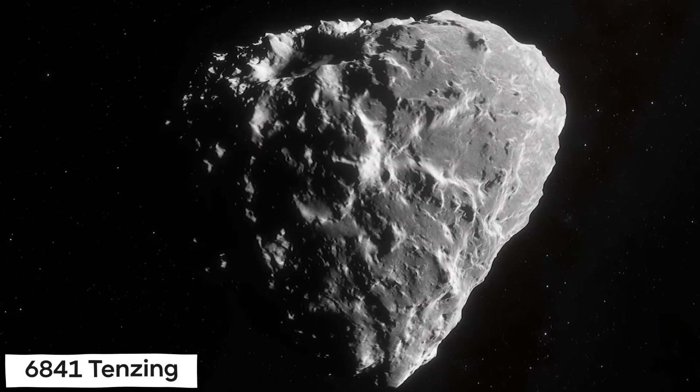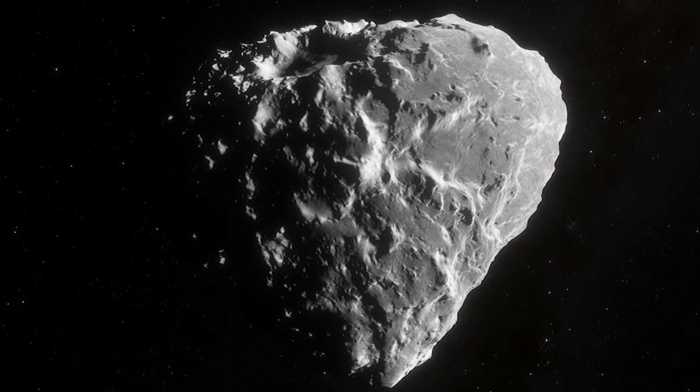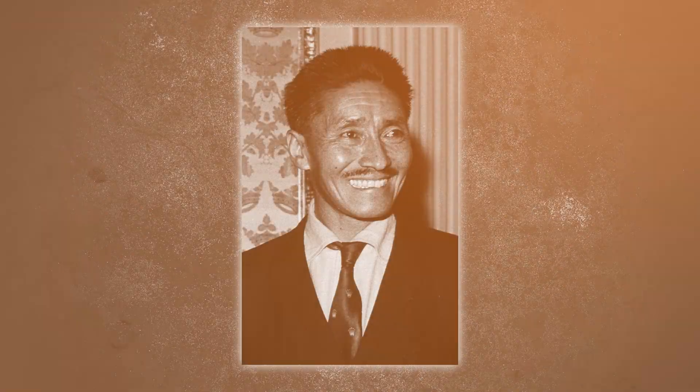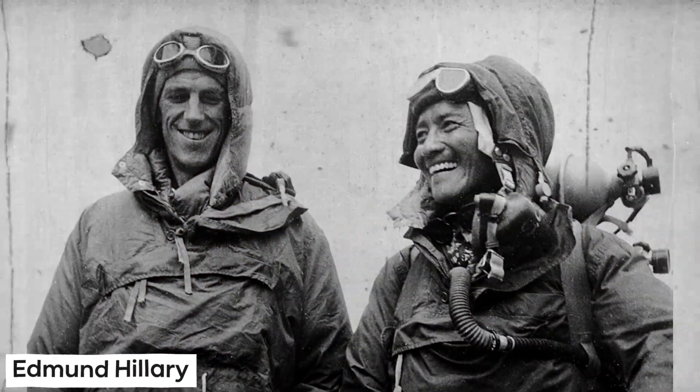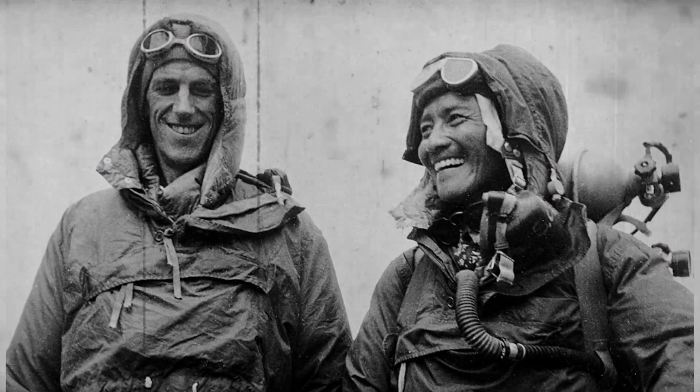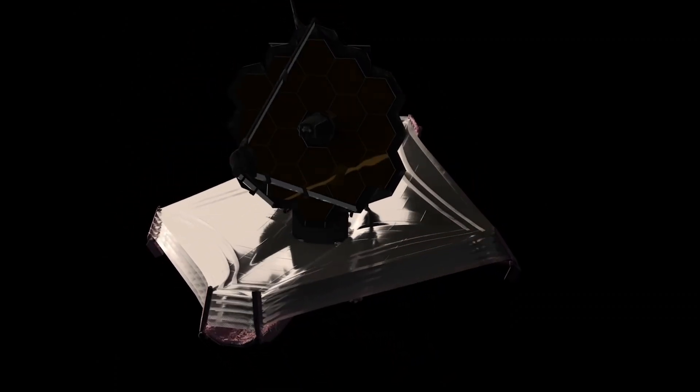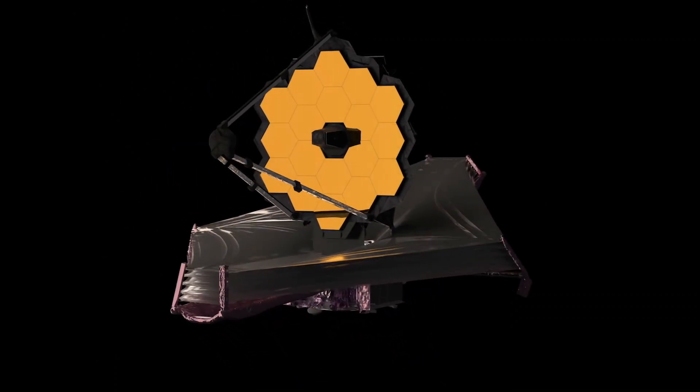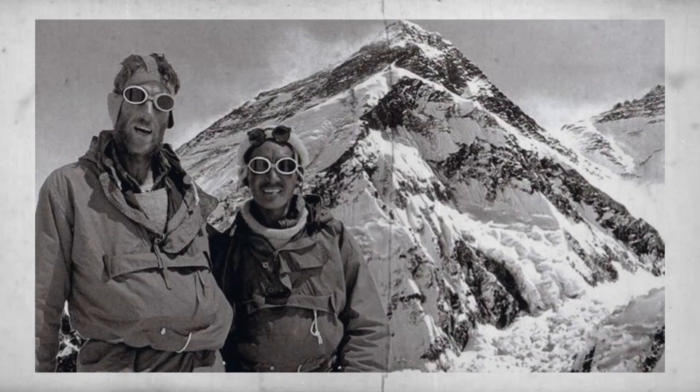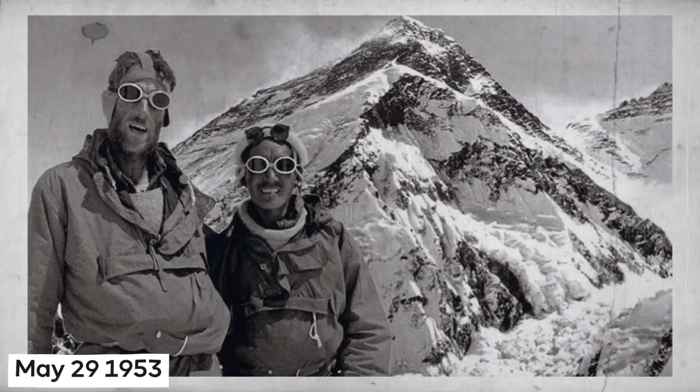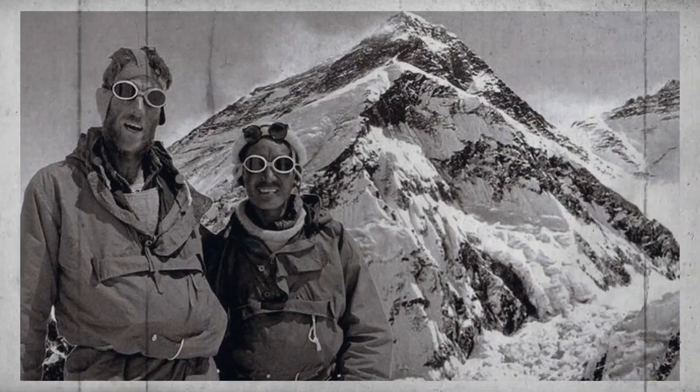6841 Tenzing was determined to be the best candidate for observation. This main belt object was given the Tibetan mountaineer Tenzing Norgay's name in honour of the man who, along with Edmund Hillary, became the first to reach the summit of Mount Everest. James Webb's observations were conducted out just a few days before the 69th anniversary of the summiting of the peak, which took place on May 29, 1953. This is a complete coincidence.